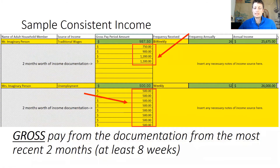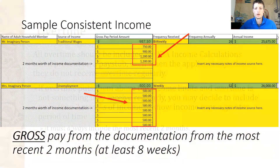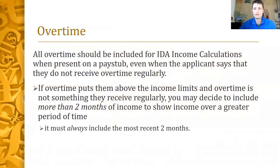Documentation needs to cover at least the last eight weeks — a weekly pay period requires eight pay stubs; twice a month or biweekly requires four. All overtime should be included in IDA income calculations when present on a pay stub, even if the applicant says they don't receive it regularly. If overtime puts them above the income limits and isn't received regularly, you may include more than two months of income to show a greater period of time, but it must always include the most recent two months.